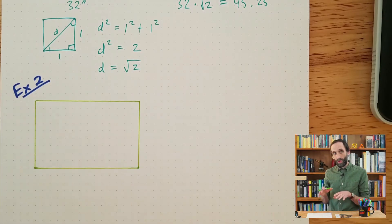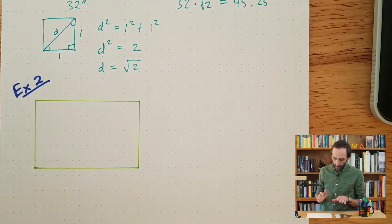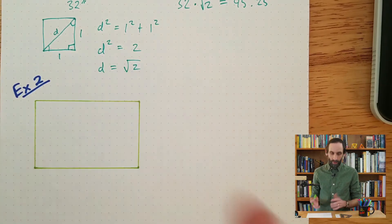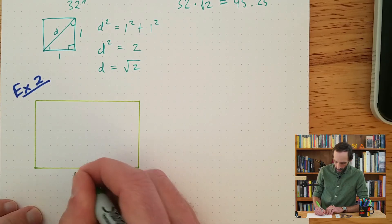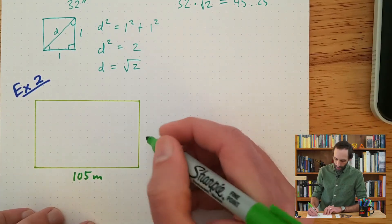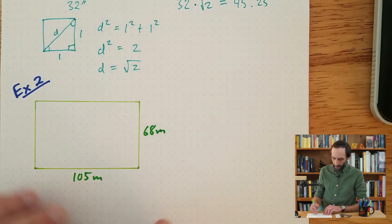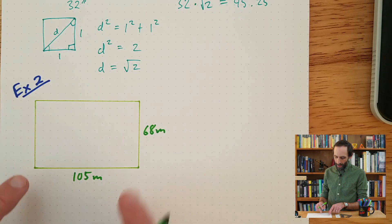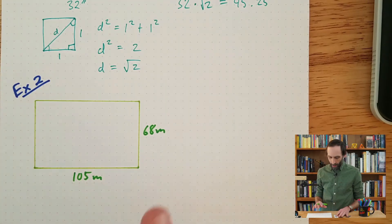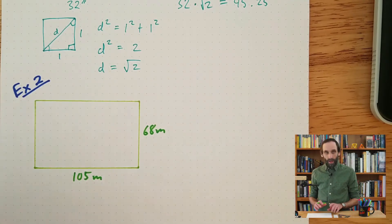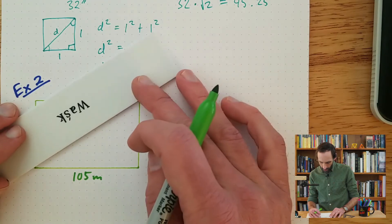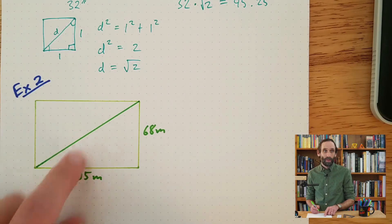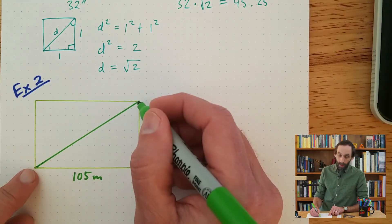I'll start with this rectangle, which represents the soccer field at the Salt Lake Stadium. We need to know the dimensions before we can find the diagonal. According to the internet, the length of the soccer field is 105 meters and the width is 68 meters. This is a fairly standard size — it's actually the same size as the Camp Nou field where the Barcelona Football Club plays. Now that we have the length and width, we're going to use the Pythagorean theorem.